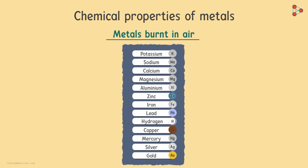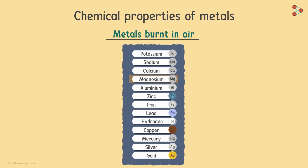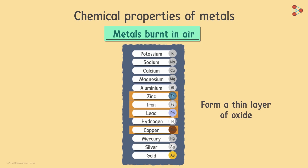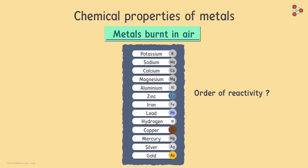So we see somewhat of a pattern amongst the metals. Sodium and potassium are more reactive, whereas magnesium is relatively less reactive. But burning in oxygen doesn't really help us decide about the reactivity of zinc, iron, lead or copper. All we know about these four is that they form a thin layer of oxide around the metals, so just this category of burning metals in air isn't enough to judge the order of reactivity of these metals.